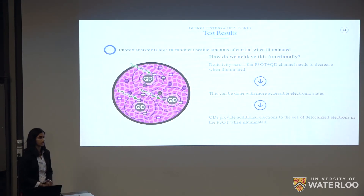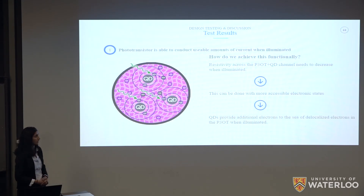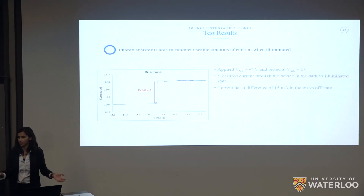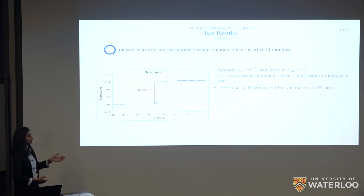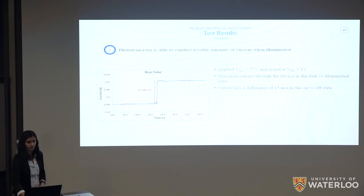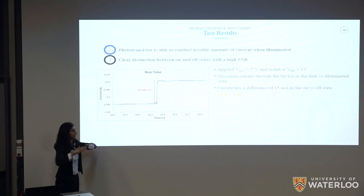For our first primary requirement — channel conduction when illuminated — we needed to reduce channel resistance by introducing more accessible electron states under illumination. Quantum dots provide additional electrons to the delocalized electron sea within the polymer. We probed using a probe station at various gate-source and drain-source voltages, choosing negative 7 volts gate and 1 volt drain. The measured current showed a difference of about 15 mA between illuminated and dark states, achieving a signal-to-noise ratio of approximately 188.